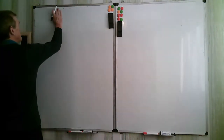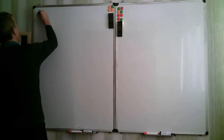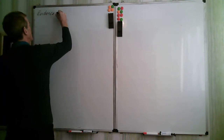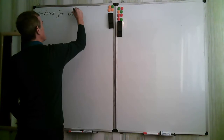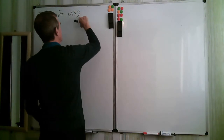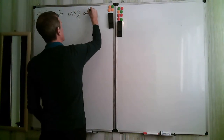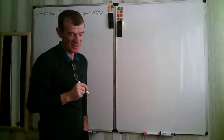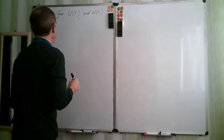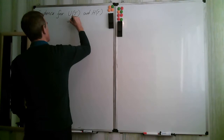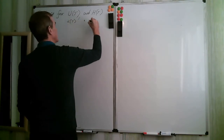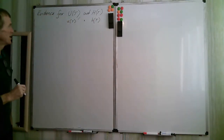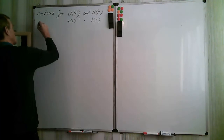So let's look at the evidence for U(T) and H(T) — the argument that intrinsic internal energy and specific enthalpy are only functions of temperature. The first experiment is Joule's experiment.